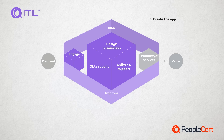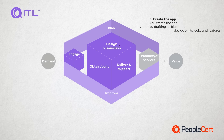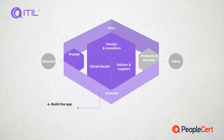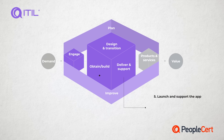Third, you design and transition. You create the app by drafting its blueprint, deciding on its looks and features and how users will interact with it. Fourth, you Obtain/Build. In this example, you start writing the code for the app.